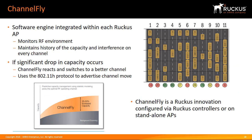ChannelFly is a Ruckus proprietary technology that measures the performance of wireless LANs across all available channels. The AP intelligently samples different channels while using them for service. ChannelFly assesses channel capacity every 15 seconds and changes the channel when, based on historical data, a different channel is likely to offer higher capacity. Each AP makes channel decisions based on historical data and maintains an internal log of channel performance. When ChannelFly changes channels, it utilizes 802.11h channel change announcements to seamlessly change channels with no packet loss, affecting both wireless clients and Ruckus mesh nodes in the 2.4 GHz and 5 GHz bands.